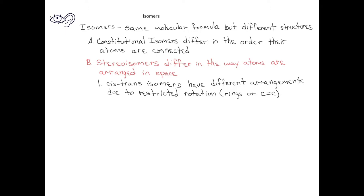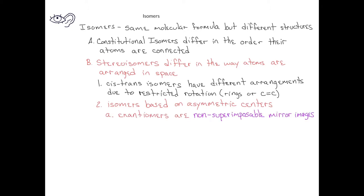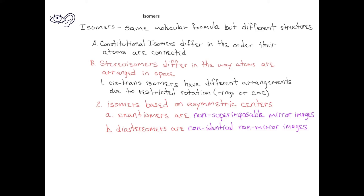There's another type of stereoisomer which is based on compounds that have asymmetric centers. Within these molecules that have asymmetric centers, we can further differentiate isomers into enantiomers, which result from different arrangements due to the presence of an asymmetric center and result in non-superimposable mirror images, and a second class known as diastereomers, which result from different arrangements due to an asymmetric center but are non-identical, non-mirror images.